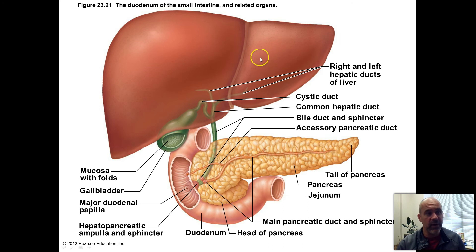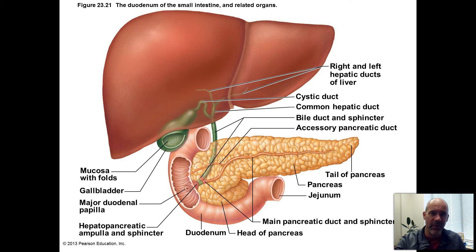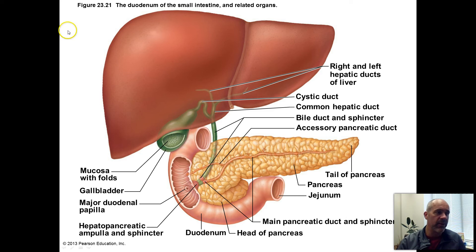The liver produces bile, which is going to help you dissolve your lipids in the small intestine so that enzymes can actually access them and break them down. Think about it like grease sitting in water in your kitchen sink — oils and water don't mix. Bile helps the oils and greases we take in from our diet combine with the watery fluids in the duodenum so they can be digested better. Bile is kind of like your own personal detergent, and it's made by the liver.